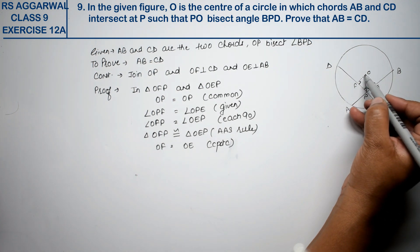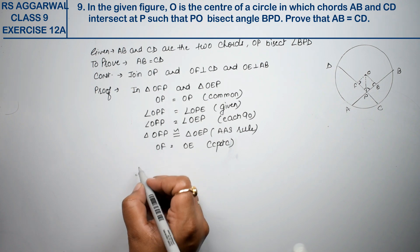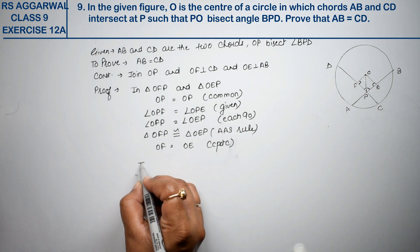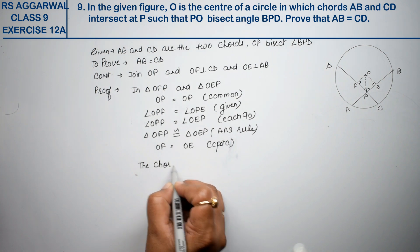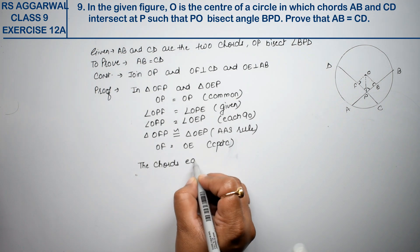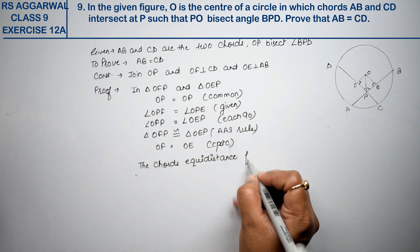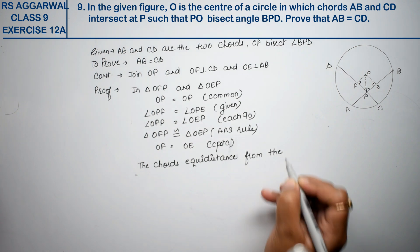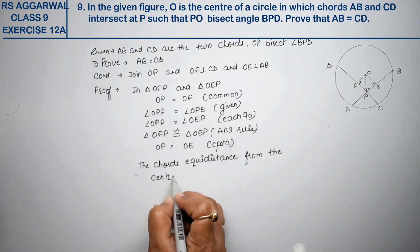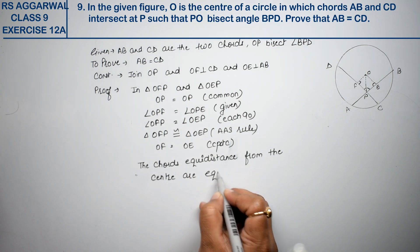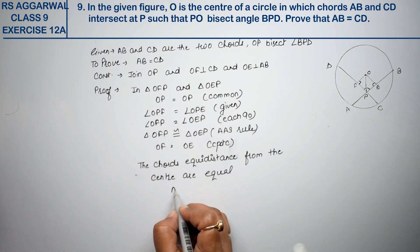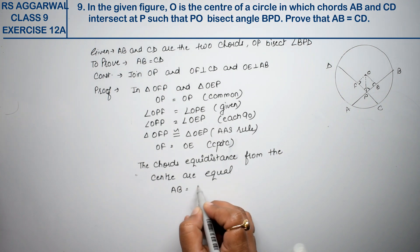Now, when OF equals OE by CPCTC, we know that chords which are equidistant from the center are equal. So we can say: The chords equidistant from the center are equal. That means AB equals CD. This is the answer.